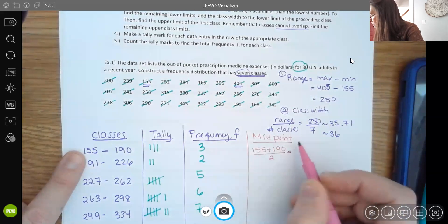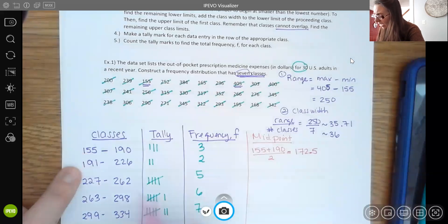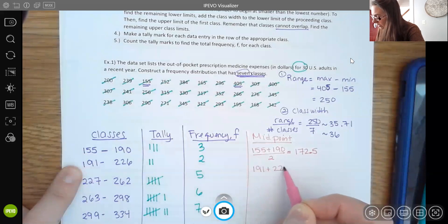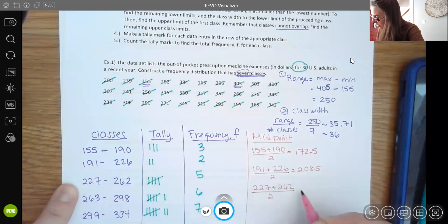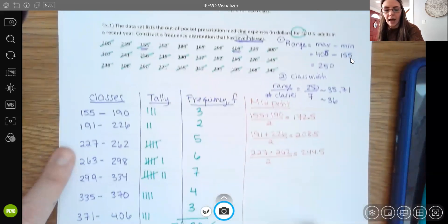So in this case we get 172.5. And then the same thing for the next one. We take 191 and 226, add those first, then divide by two, and you get 208.5. Here we do 227 and 262, add those together and divide by two, and we get 244.5 and so on.